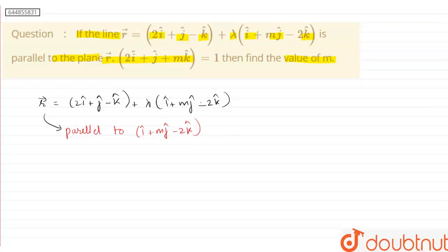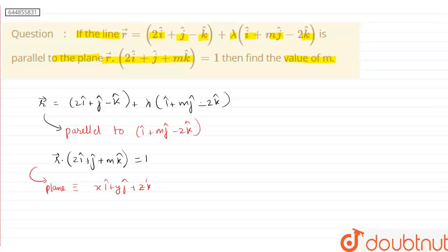Now the given equation of the plane is r dot (2i cap plus j cap plus m k cap) equals 1. Expanding using r = x i cap plus y j cap plus z k cap, the equation of the plane becomes 2x plus y plus mz equals 1.